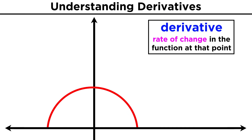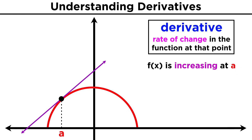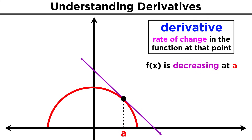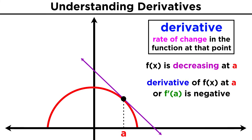The derivative of a function tells us about the rate of change in that function at a particular input value. If a function is increasing at a particular point, its derivative is positive at that point, which is just a fancy way of saying that the slope of its tangent line is positive at that point. If a function is decreasing at a particular point, its derivative is negative at that point, and the slope of its tangent line will be negative.